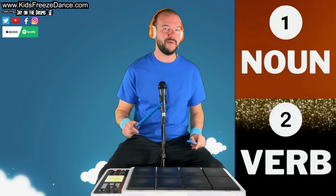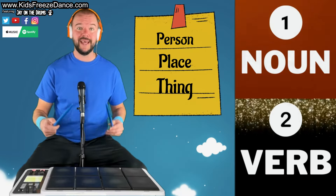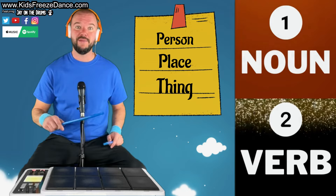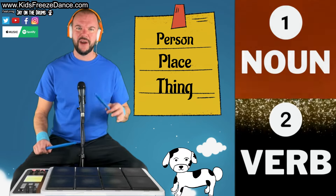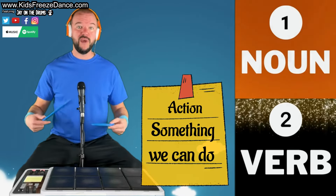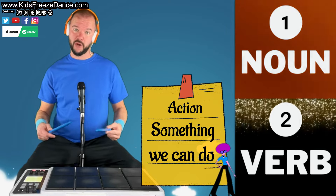Alright, before we start, let's remember that a noun is a person, place, thing, or it could even be an animal, right? And then a verb — a verb is something we can do, so an action word.